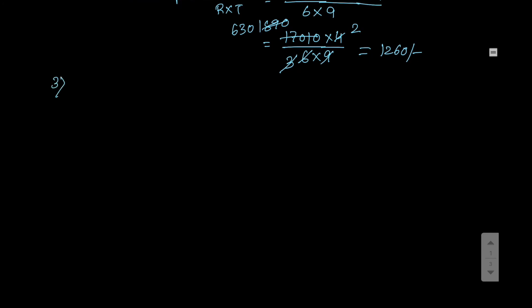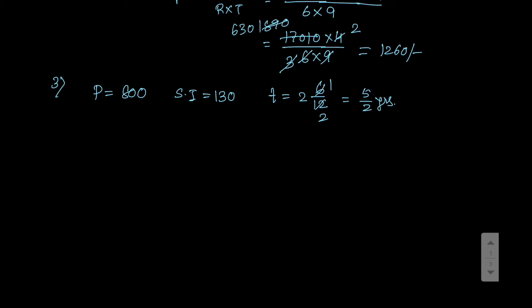Now move on to sum number 3. Find the rate of interest when 800 rupees fetches rupees 130 as simple interest. So P equals 800, SI equals 130, for 2 years 6 months — that means T equals 2 and 6 by 12, which gives 5 by 2 years.